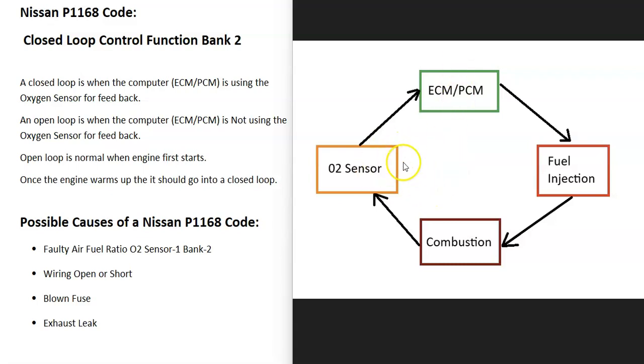When it's in an open loop, it's not using the O2 sensor for feedback. And basically when this happens, it's just guessing what it should be sending into the engine. Now this will happen when the engine first starts up. Until the engine warms up, it will be in an open loop.